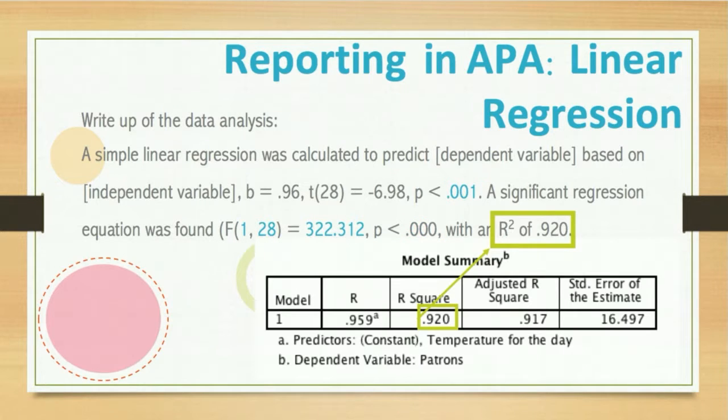Then we have to go to our model summary table and it gives us the r-squared value. We type R² = .920 and we go to three decimal places, making sure there is no zero in front of that because we cannot have an r-squared value of 1 or greater. That's how you report a linear regression in APA style.